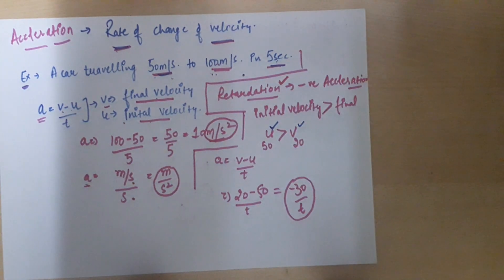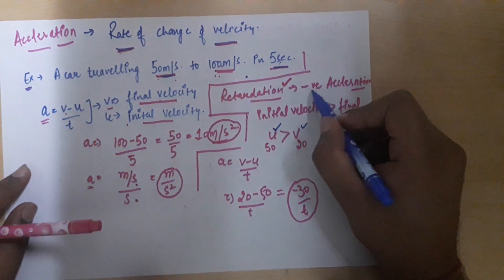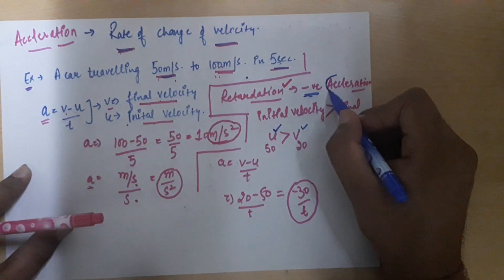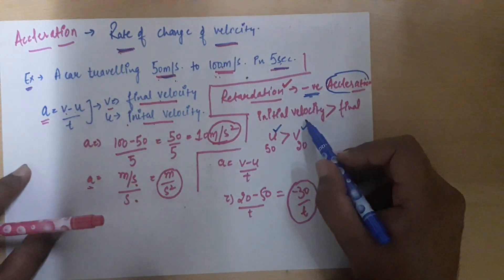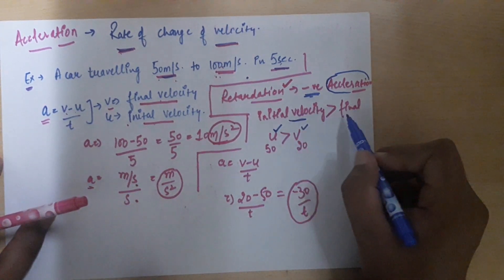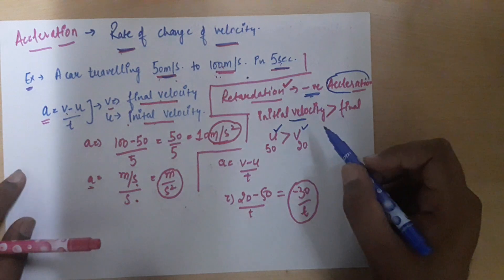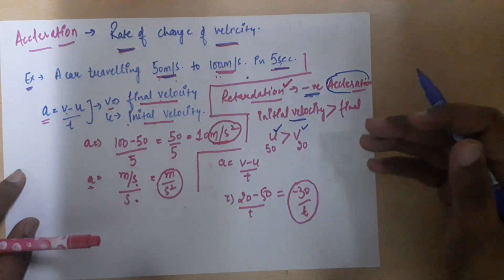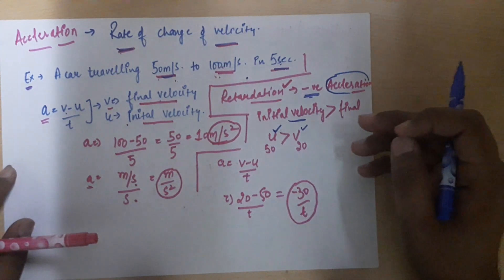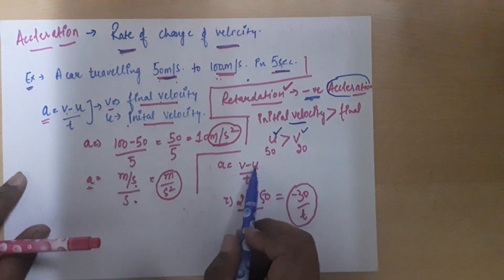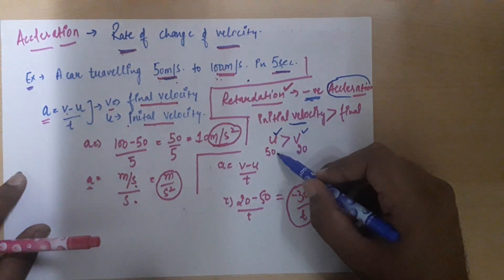One more important thing to understand is retardation. Retardation is nothing but negative acceleration — when acceleration is negative, we call it retardation. This happens when initial velocity becomes more than the final velocity. Using the formula v minus u by t, if initial velocity is greater, the result will be negative.